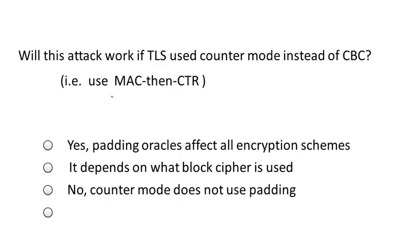The second lesson: MAC-then-CBC does provide authenticated encryption, but only if you don't reveal why the encryption failed. In this case, the padding oracle completely destroyed the authenticated encryption property. As a final note: if TLS used MAC-then-counter-mode encryption instead of MAC-then-CBC, the padding oracle attack would not be possible, because counter mode doesn't use any padding at all. TLS also supports counter mode encryption, and those modes are simply not affected by padding attacks. In the next segment, I'll show another very clever attack on authenticated encryption systems.